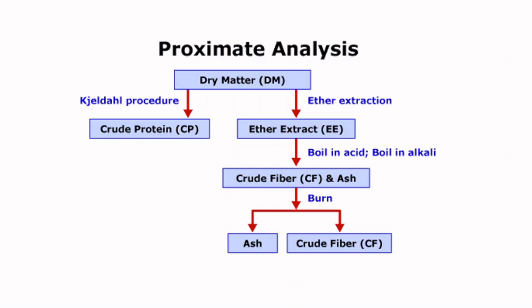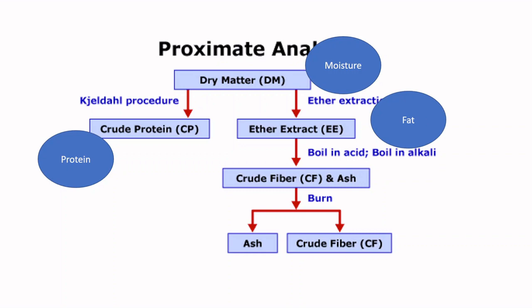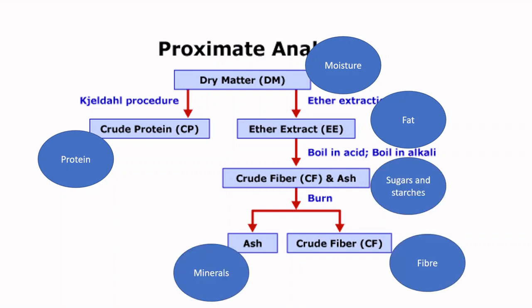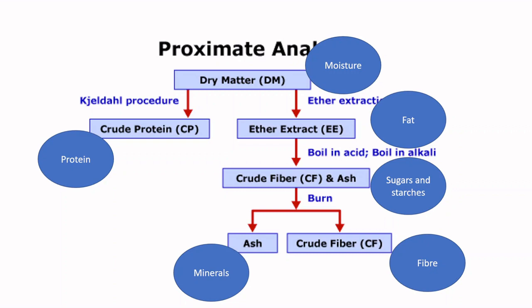To summarize proximate analysis: we measure moisture (assumed to be water), protein, fat, sugars and starches, fiber, and minerals. This is the foundation of almost everything seen in nutrition facts tables, other than the addition of vitamins.